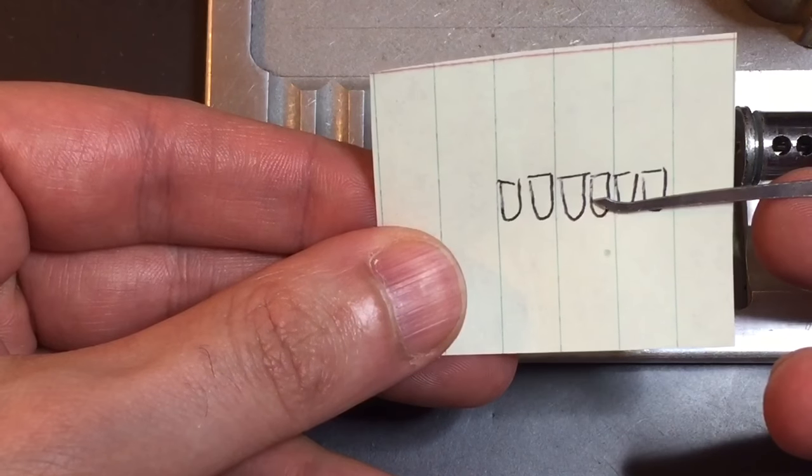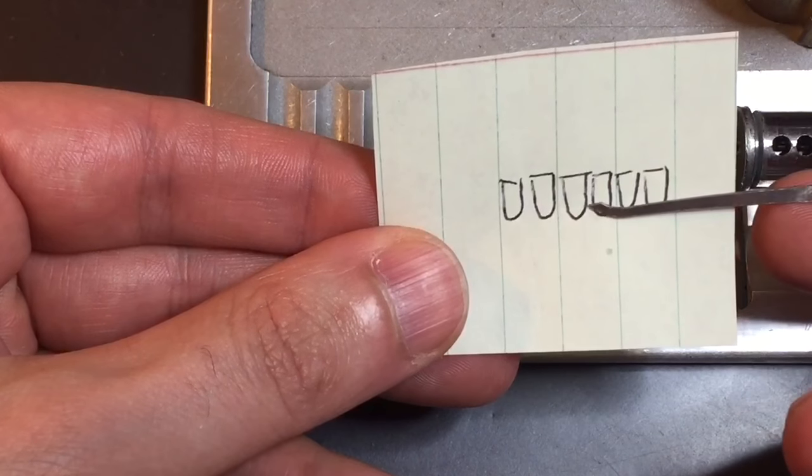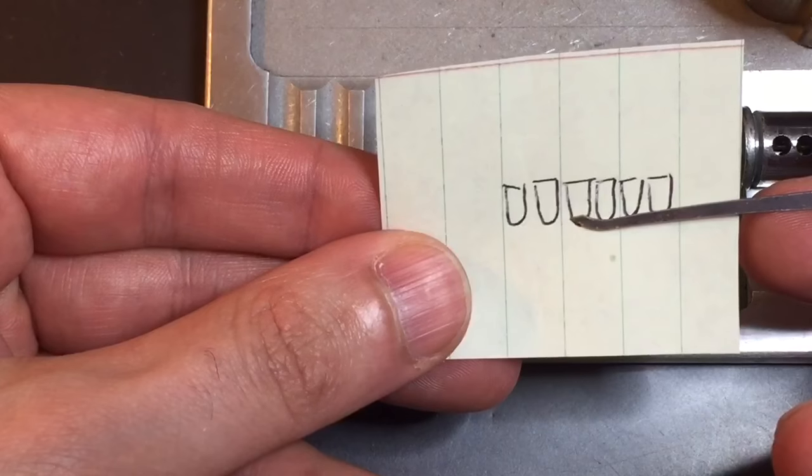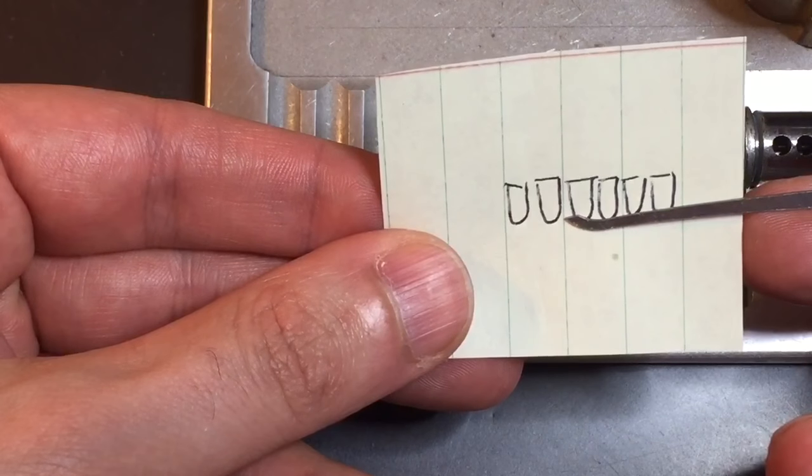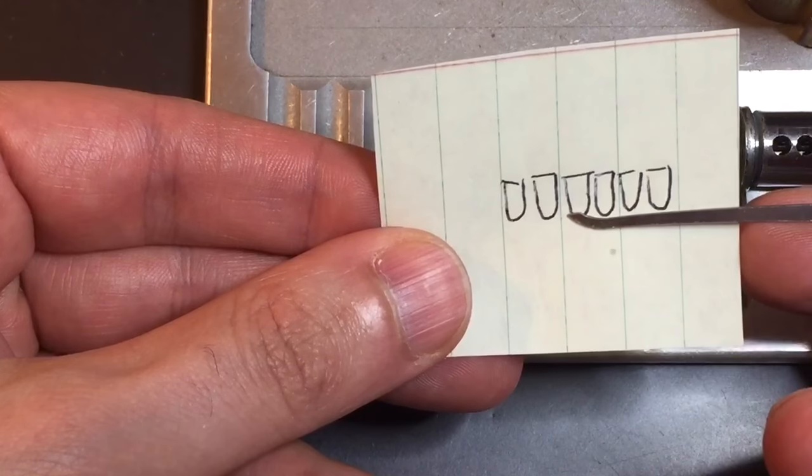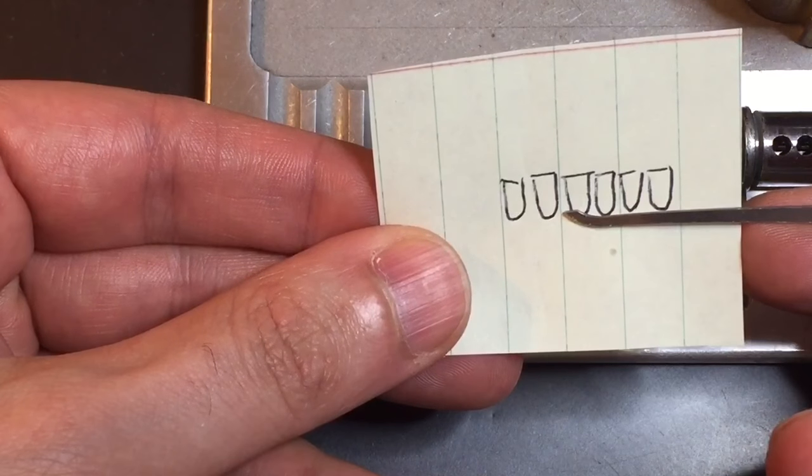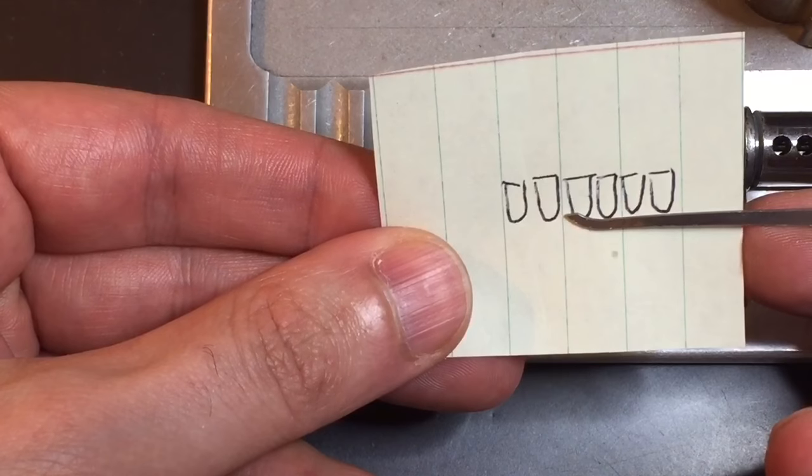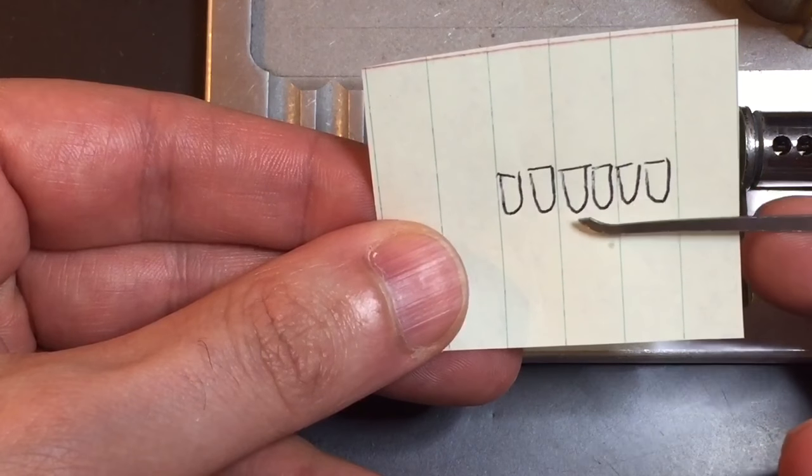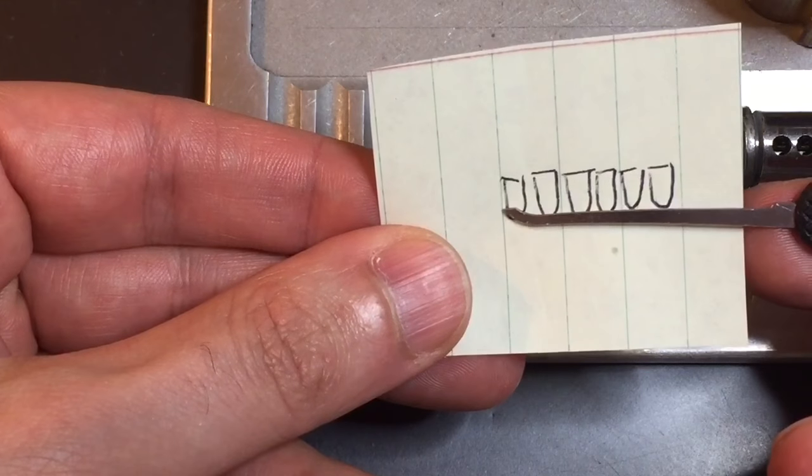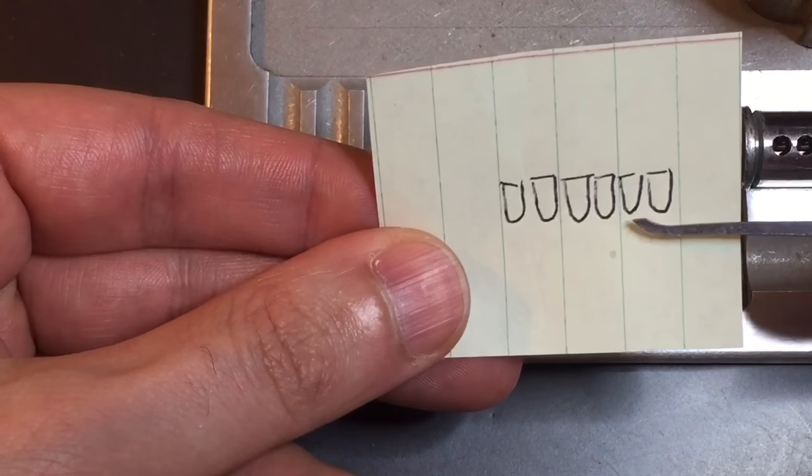And let's say after you try to hit the front of the pin you go all the way back, let's say from three to five. Now we know number four is over set. It's easy to deal with. What I do is I leave my pick right where that key pin should be. I slacken off tension ever so lightly until I feel that key pin drop back down onto my pick.